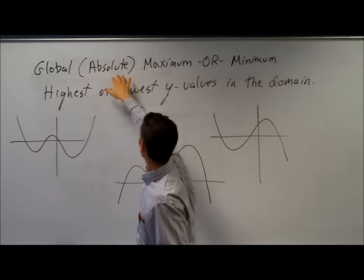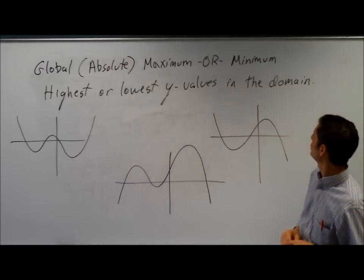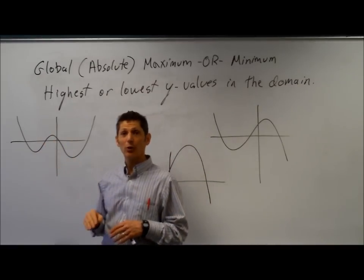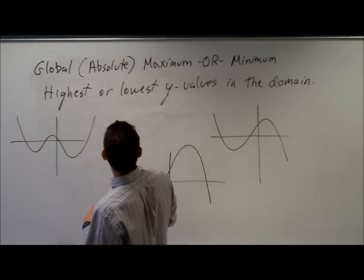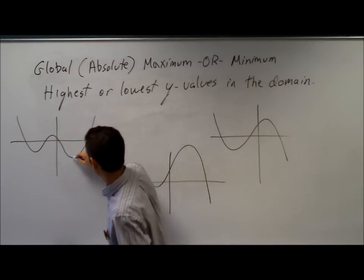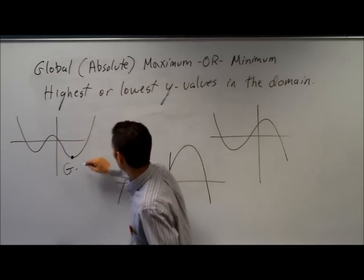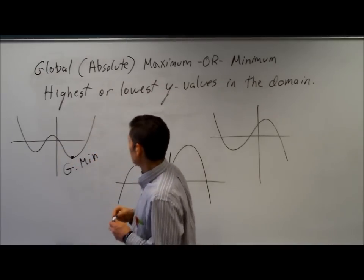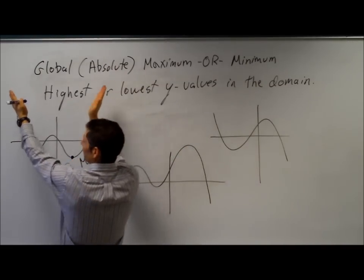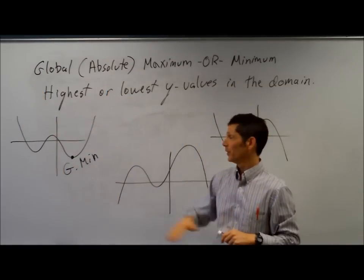A global or absolute maximum and a global or absolute minimum — these are the highest or lowest y-values in the entire domain of the function. This function has three critical points. It has an absolute or global minimum right here — this is the lowest point in the entire domain. You have to assume the function continues going forever in this direction, so there is no global maximum; it just keeps going up forever.